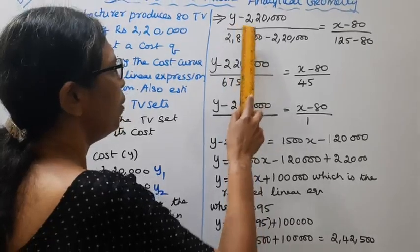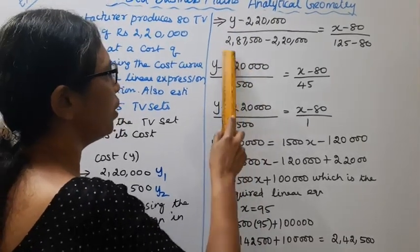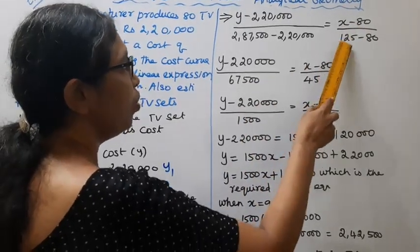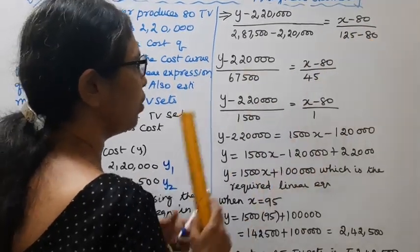Y minus 2 lakh 20,000 divided by, if we subtract, 67,500, equal to x minus 80. And 125 minus 80 is 45.